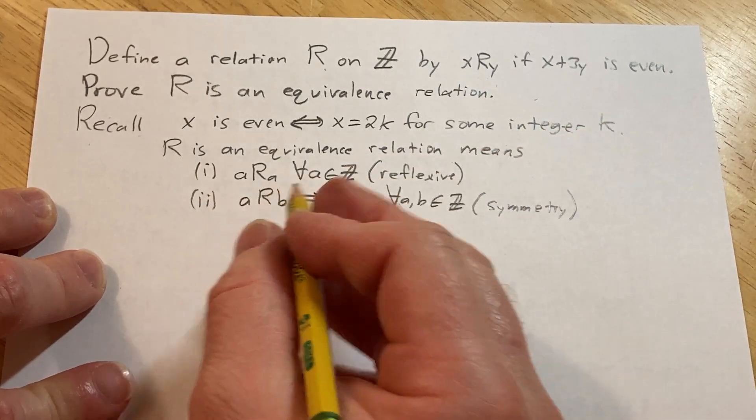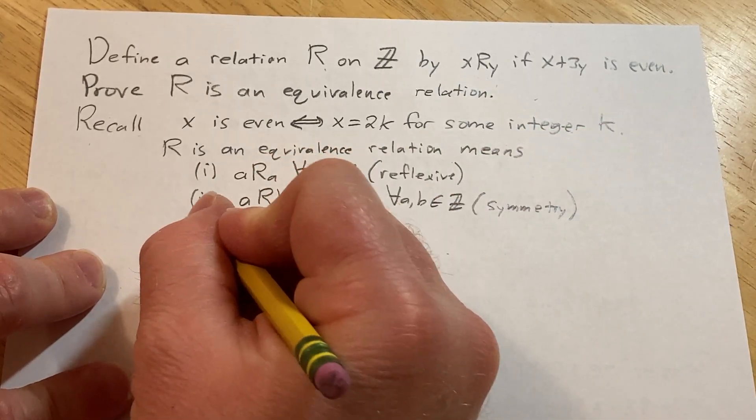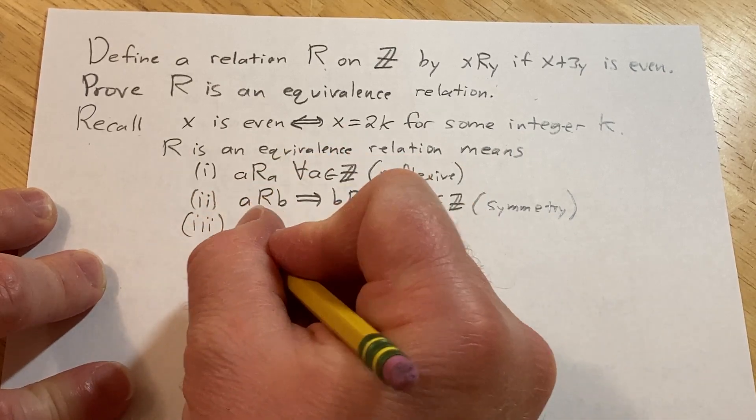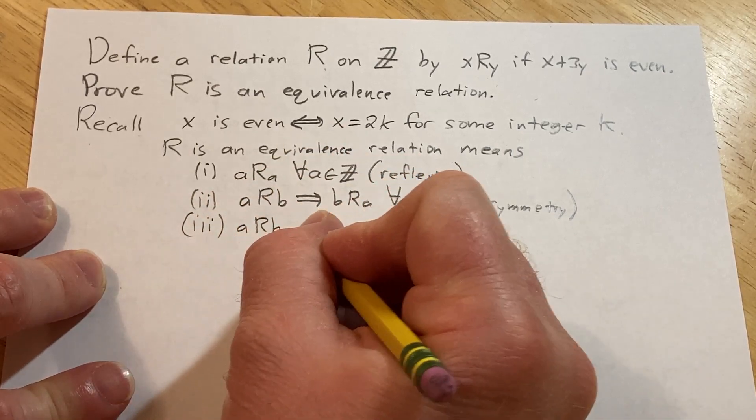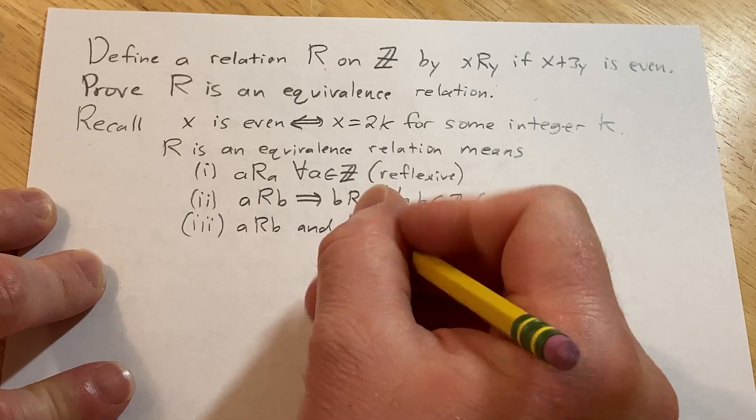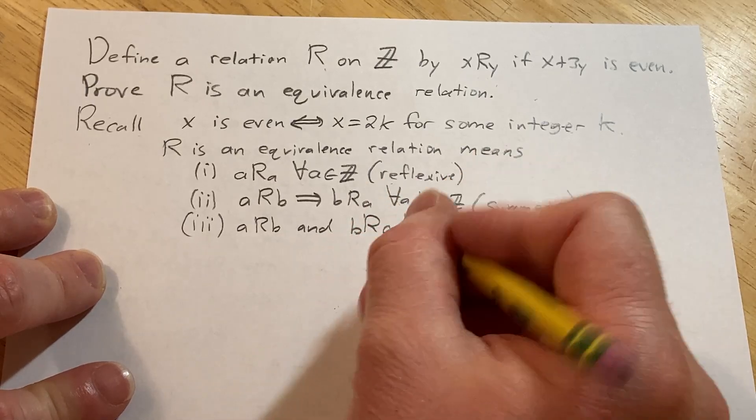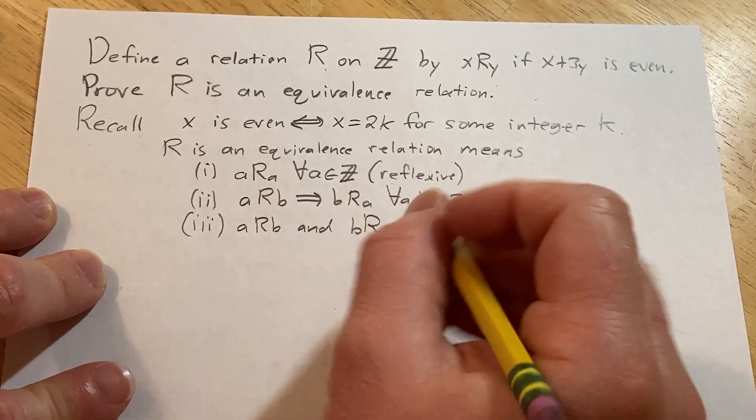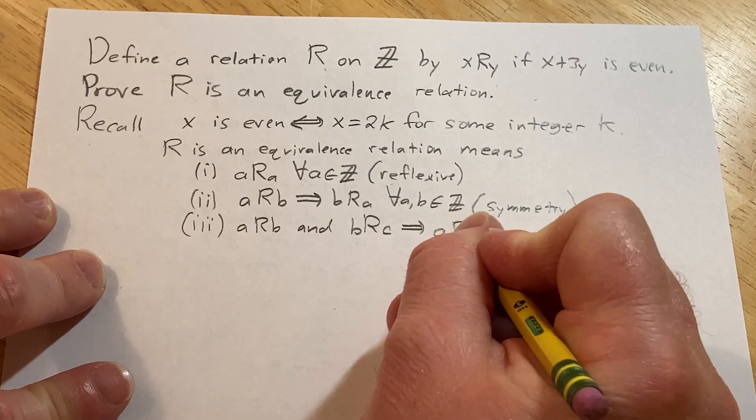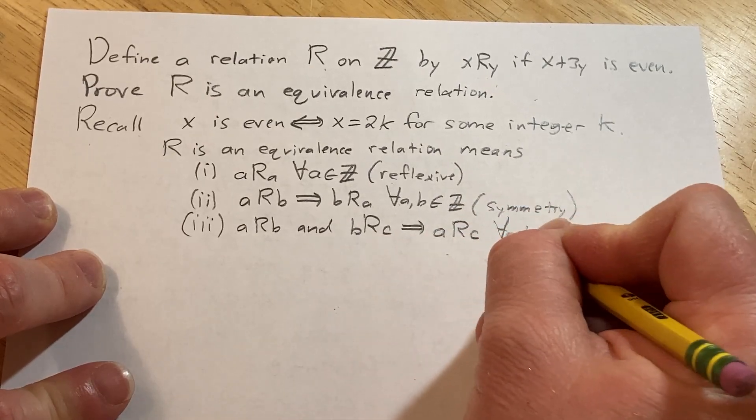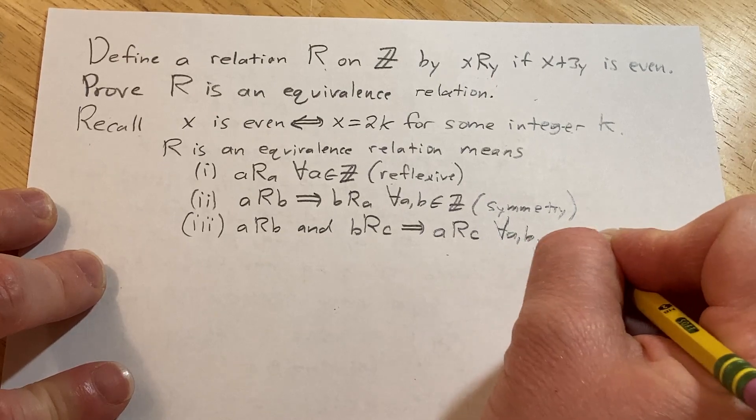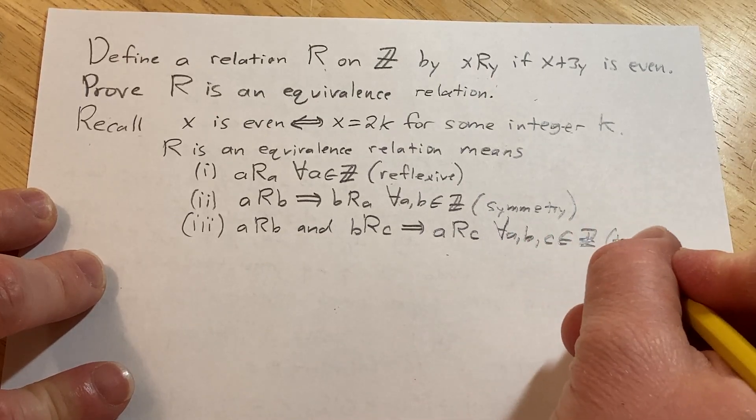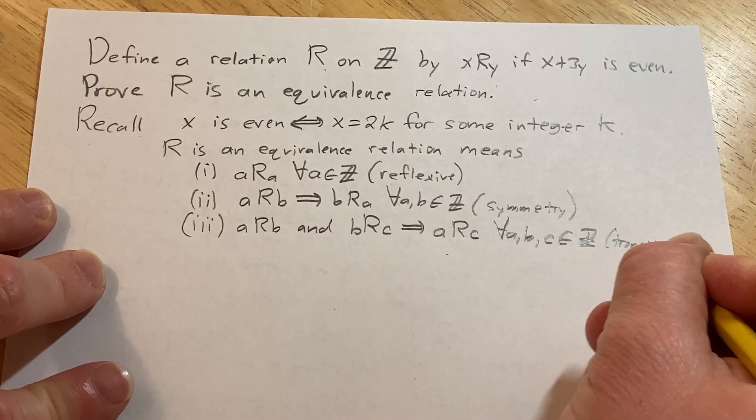And the third one is called transitivity. It says if a is related to b and b is related to c, then these two conditions together imply that a is related to c, and this has to hold for all a, b, c in Z. This one is called transitivity.